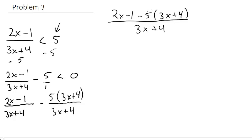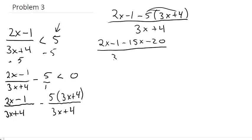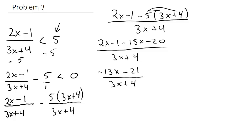Distributing the negative 5: 2x minus 1 minus 15x minus 20, all over 3x plus 4. That simplifies to negative 13x minus 21 over 3x plus 4, and this is all less than 0.